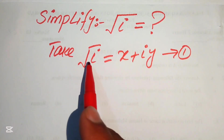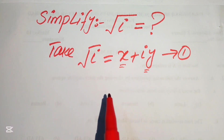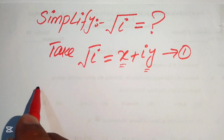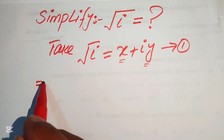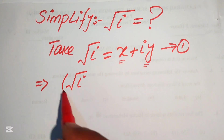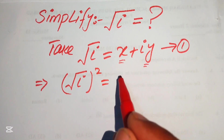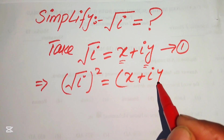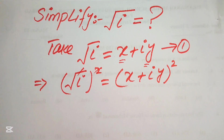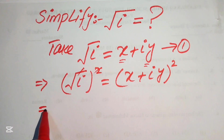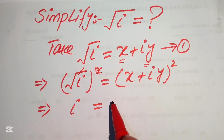In order to find the value of square root of iota, we need to find the values of x and y. To do that, we square both sides: (√i)² = (x + iy)². The left side simplifies to iota, and we expand the right side using the algebraic identity for (a+b)².